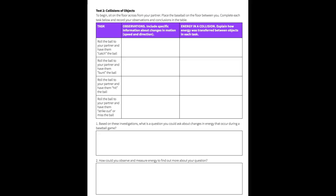In task two, when they bunt the ball, the energy transfer is not as great because a bunt doesn't exert as much energy. And in task four, when they're trying to strike out the person, there actually isn't an exchange of energy between the two objects because they miss each other and no collision occurs.